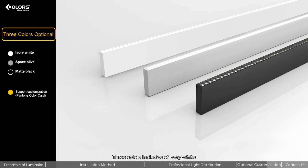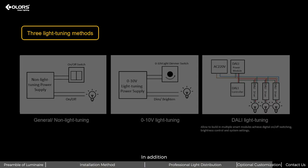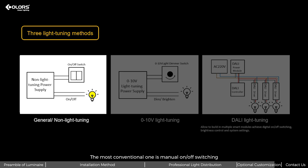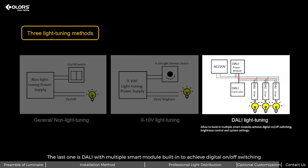Three colors inclusive of ivory white, space silver and matte black are optional for luminaire. Or you can customize your desired colors using Pantone color card. Color temperatures as well have five options and support customization. In addition, there are three light tuning methods. The most conventional one is manual on or off switching. The second one is 1 to 10 volt DC light tuning, requiring rotation of the switch to control brightness. The last one is DALI with multiple smart modules, able to achieve digital on or off switching, brightness control and system settings.